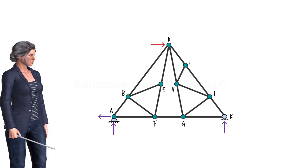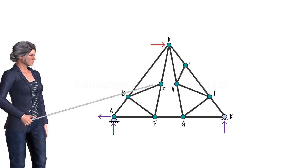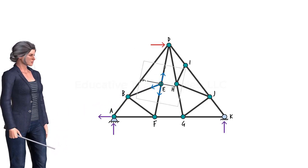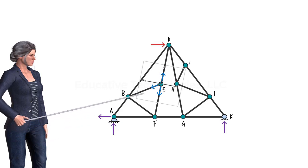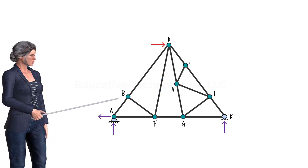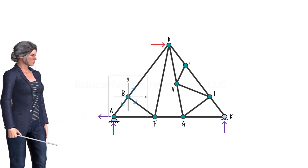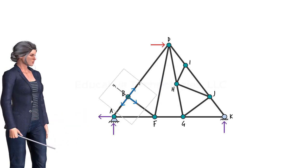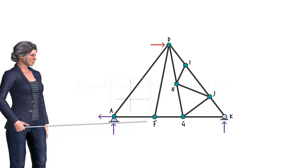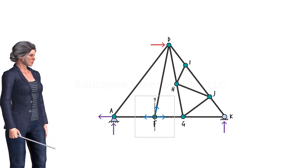The simplified truss reveals that there are only three forces acting at joint E. We place the coordinate system at E, then rotate the axes. Now we can see that the force in member BE is the only one with a component in the Y direction. Therefore, BE must be a zero force member. Next, we place the coordinate system at joint B and rotate the axes to show that BF is also a zero force member. Similarly, by examining joint F in the simplified truss, we can see that DF is a zero force member.